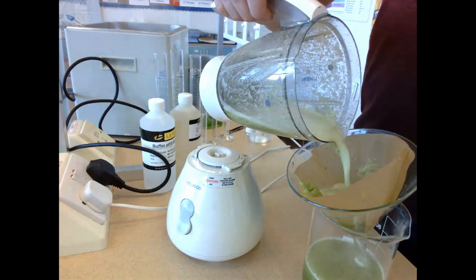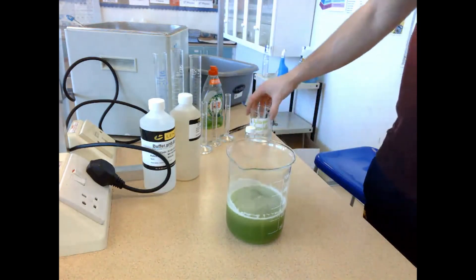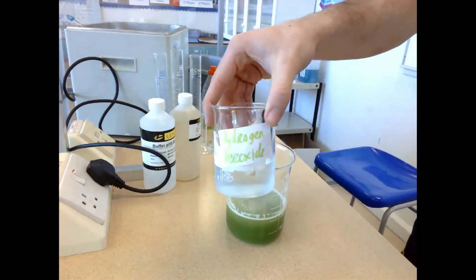Catalase is the enzyme that works with hydrogen peroxide to produce oxygen. Here's the celery solution I made earlier, and here's the hydrogen peroxide, which is the substrate in this experiment.